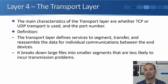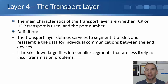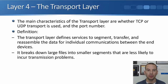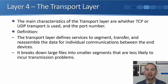The other main characteristic at this layer is the port number. For example, port number 80 for HTTP web traffic, port number 25 for SMTP email. There is quite a lot of other information also in the layer four header, but we'll talk about that when we get to that particular section in the course. The definition for layer four, the transport layer defines services to segment, transfer and reassemble the data for individual communications between the end devices. It breaks down large files into smaller segments that are less likely to incur transmission problems.